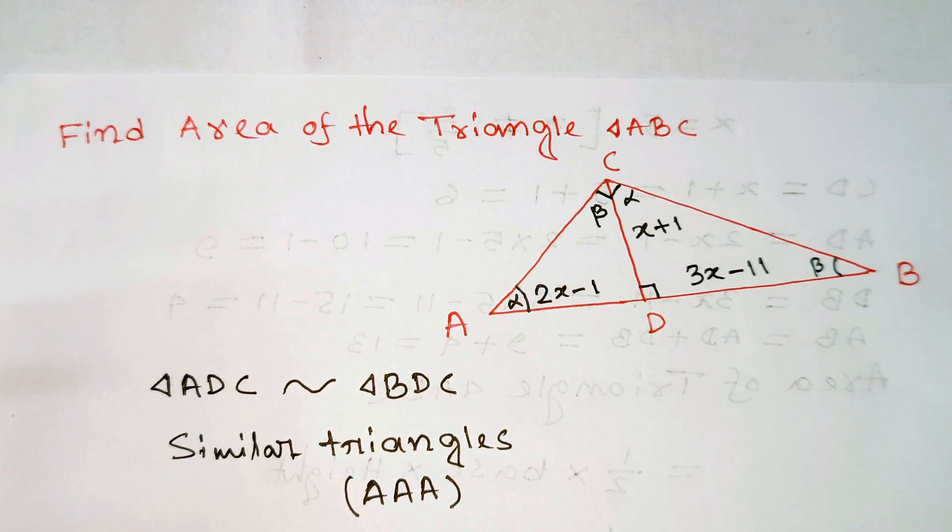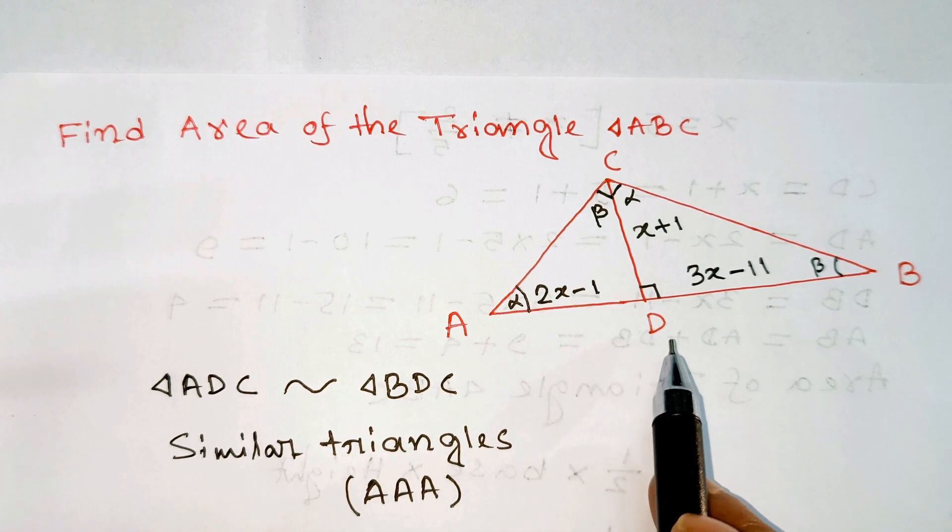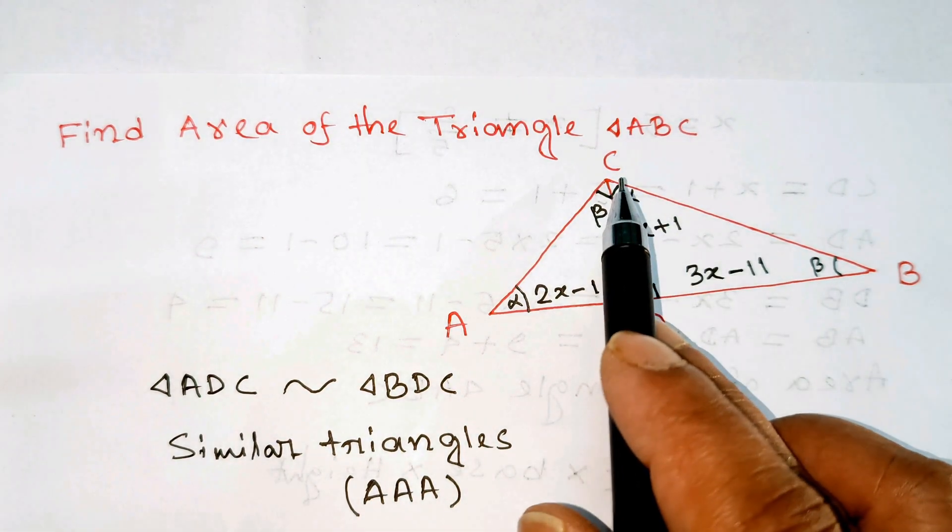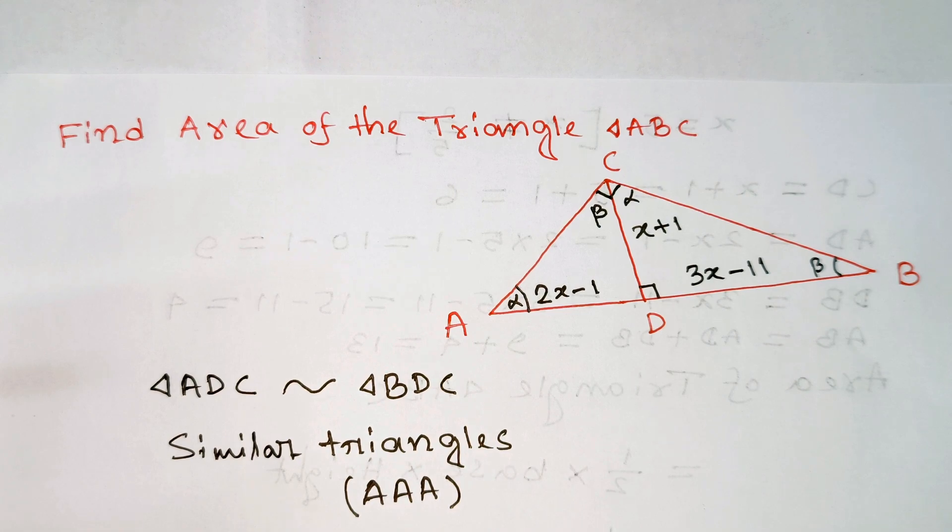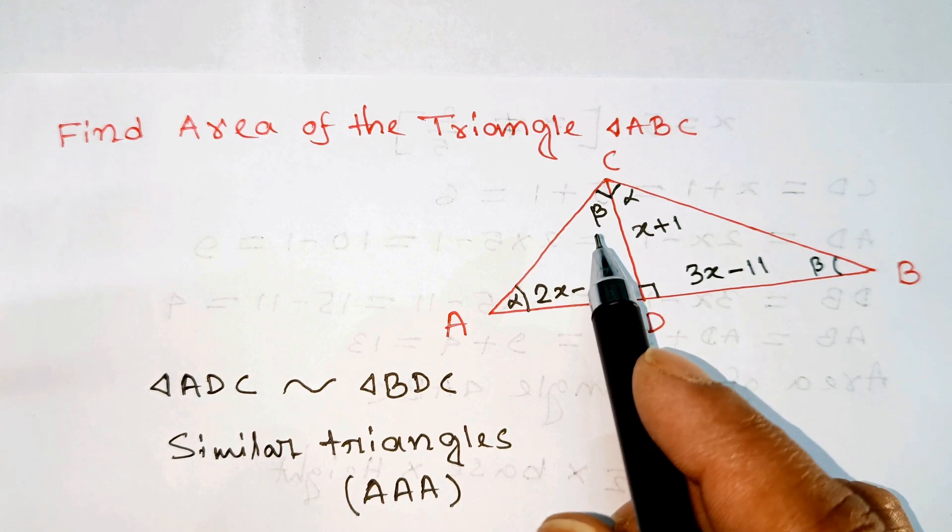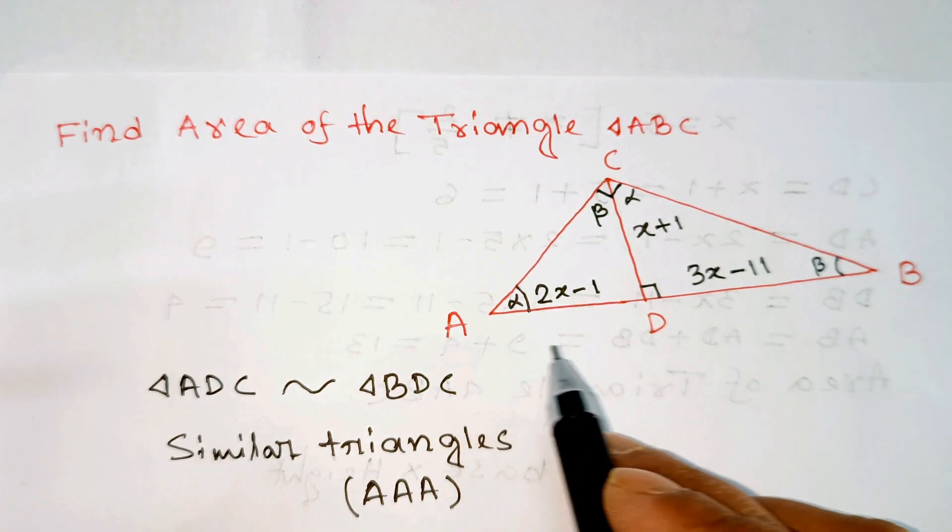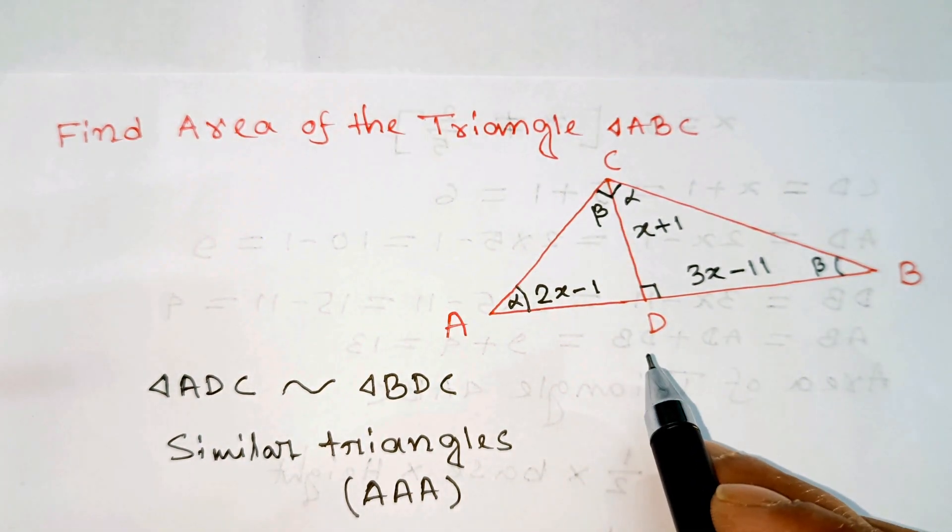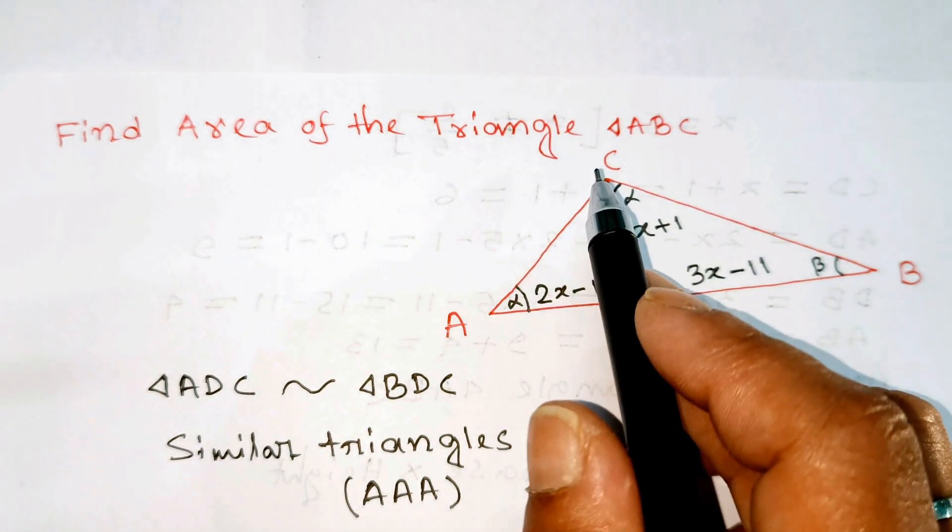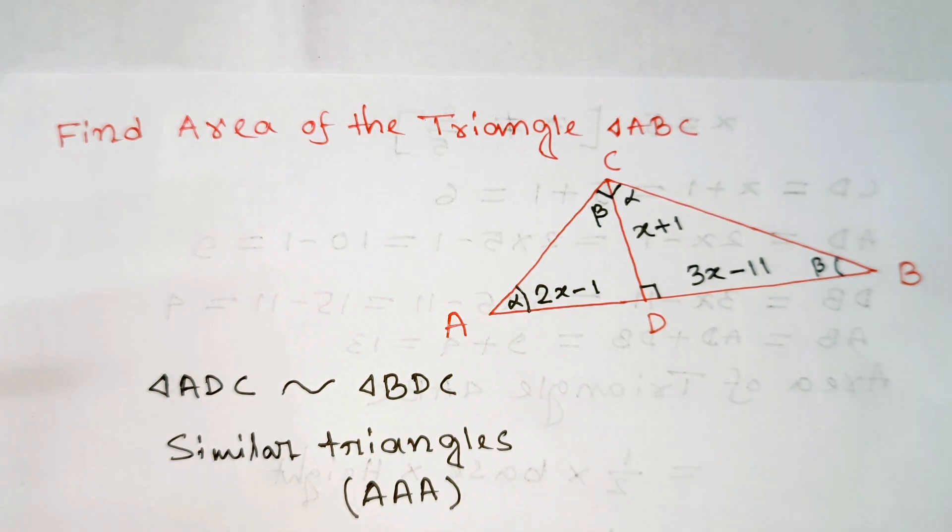Now let's focus on the two triangles, triangle ADC and triangle DBC. Let's assume that the sum of this angle, alpha plus beta, is going to be 90 degrees. Triangle ADC and triangle DBC are similar triangles according to the angle-angle similarity theorem.